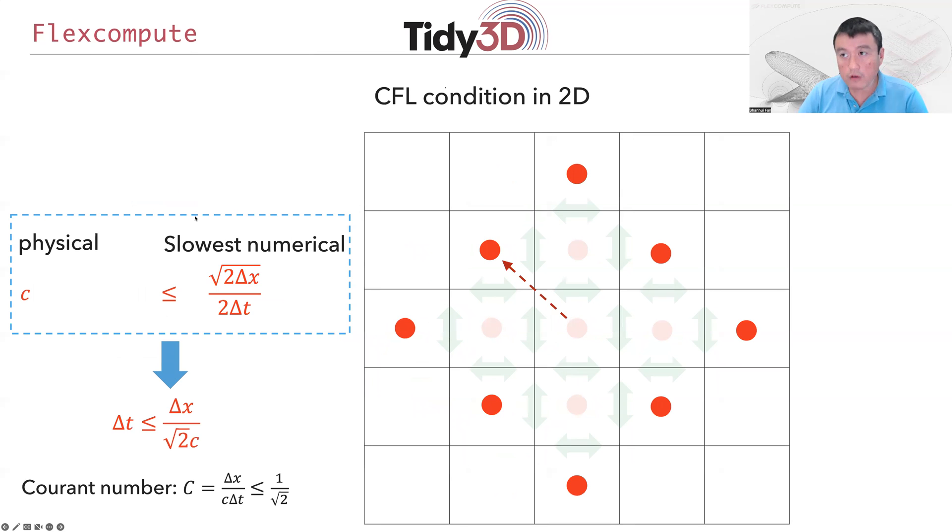To derive the CFL condition, you demand that the physical speed, which is the speed of light, needs to be smaller than the slowest numerical speed. That gives this relation relating Δt to Δx. Notice the √2 that arises from this being a two-dimensional system. In two dimensions, the Courant number is now one divided by √2, smaller than the case in one dimension.